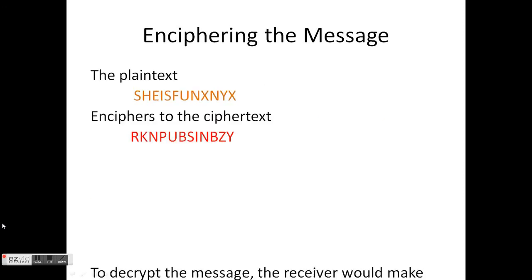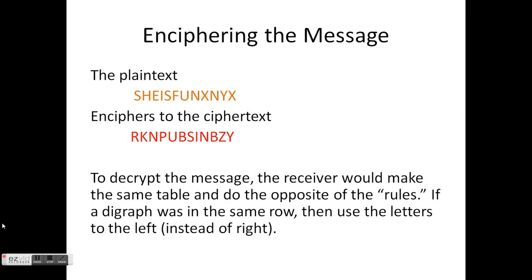Okay, so now we have enciphered each digraph. We put the digraphs together, giving us the final ciphertext. Looks kind of crazy. To decrypt the message, the receiver would just take the same table that we created and do the opposite of the rules. So if a digraph is in the same row, then just use the letters to the left instead of to the right, or letters above instead of beneath, and so on. Thanks.